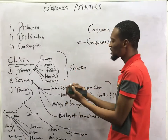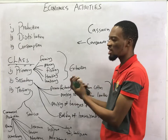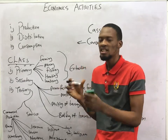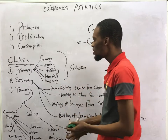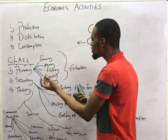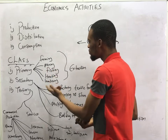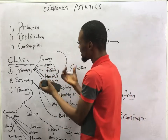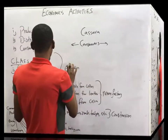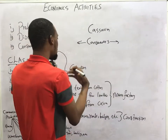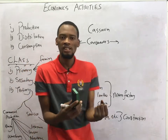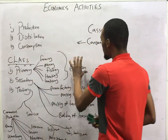Primary activities deal with the extraction of raw materials from land, sea, and various sources. For example, farming, mining, fishing, hunting, and lumbering. If you look at these activities, they deal with extraction of raw materials. So any activity that involves extraction of raw materials — getting materials in their raw state — is a primary activity.